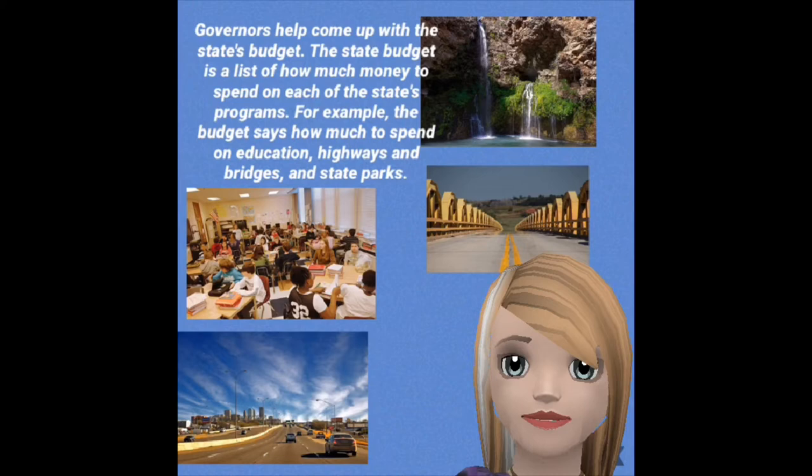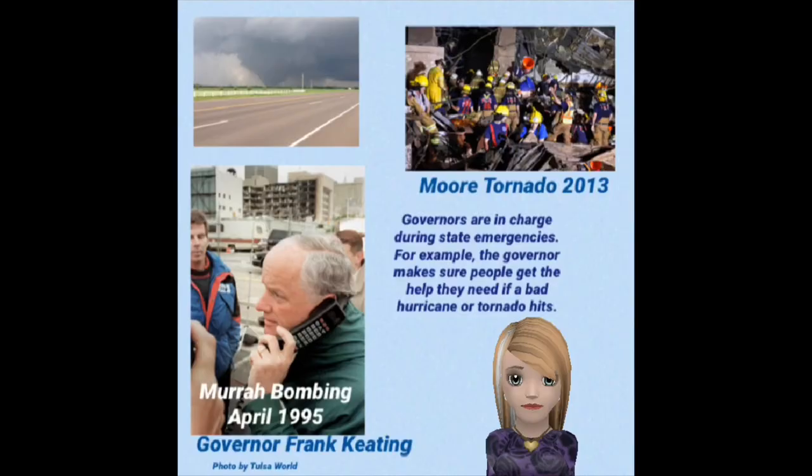For example, the budget says how much to spend on education, highways and bridges, and state parks. Governors are also in charge during state emergencies. For example, the governor makes sure people get the help they need if a bad hurricane or tornado hits.